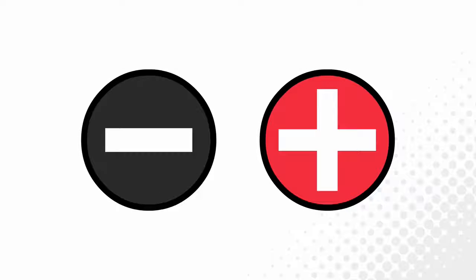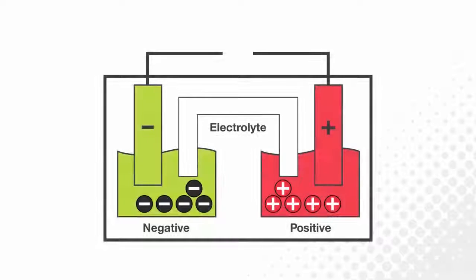Electrolyte contains both negatively and positively charged particles, called ions. It's the reaction between the electrolyte and the lead plates in the battery that sets off a chemical change and an exchange of ions, which in turn creates the electrical charge in the battery.